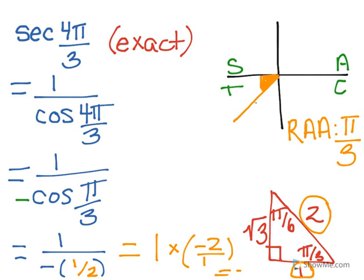So our final answer down here in the corner is negative 2. So the secant of 4π over 3 exactly is just negative 2.